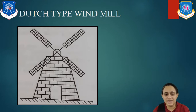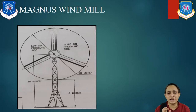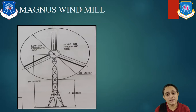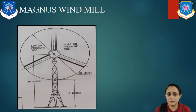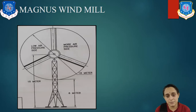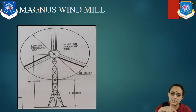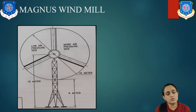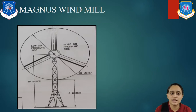The Magnus type windmill has a special design — it uses a barrel or a half-cut cylinder instead of blades. This barrel revolves around its own axis. The Magnus effect is produced due to this rotor rotation. This type of windmill is also suitable for high-speed wind, and it is used only for electrical power generation.